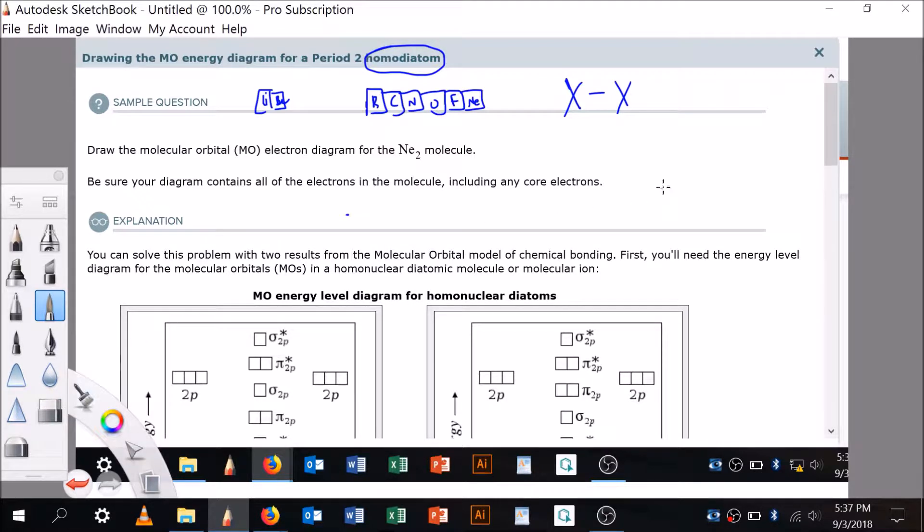The first thing we're going to do is set up our template. The 1s orbital makes a sigma antibonding and a sigma bonding. Here's the 2s orbital. You need to keep this in mind - this is what you need.